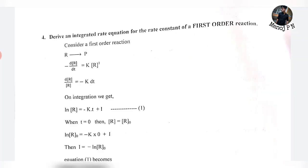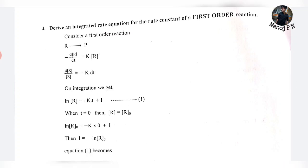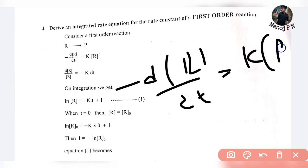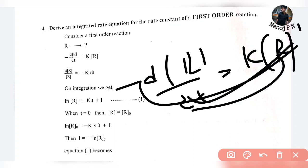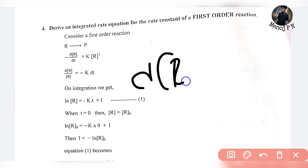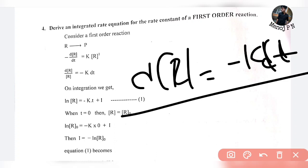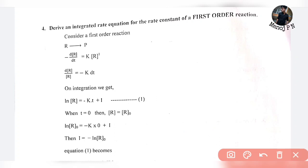Next, derive an integrated rate equation for the rate constant of a first order reaction. Same approach as zero order. For first order: R tends to P, minus dR divided by dt is equal to k into R to the power of one. Rearranging gives dR divided by R equal to minus k dt. Integrating both sides — integrating dR over R gives ln R, and the right side gives minus kt plus integration constant i.